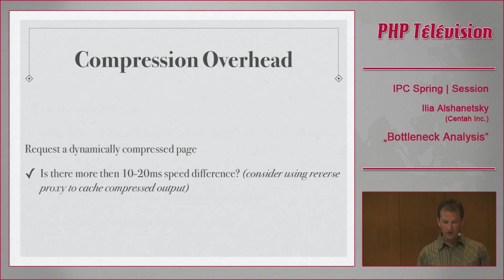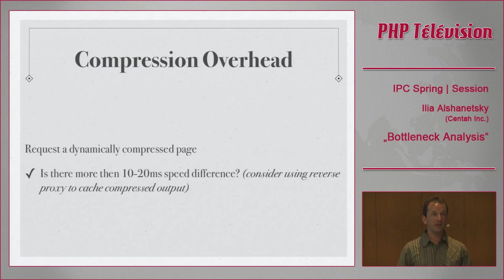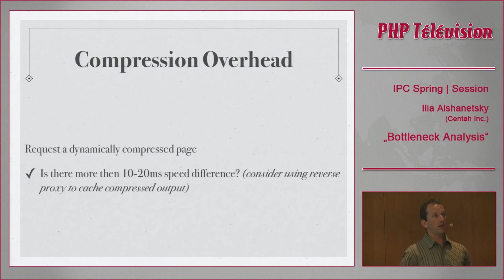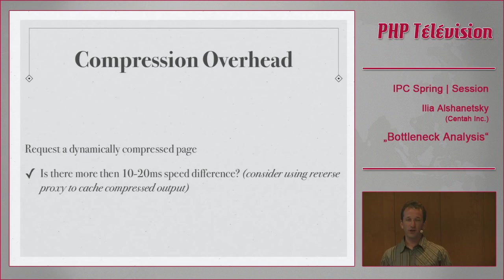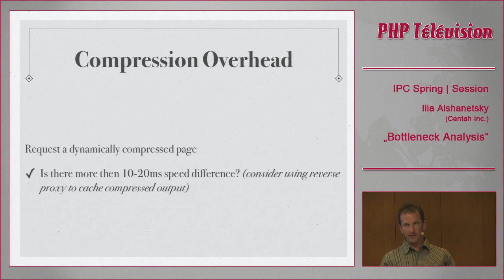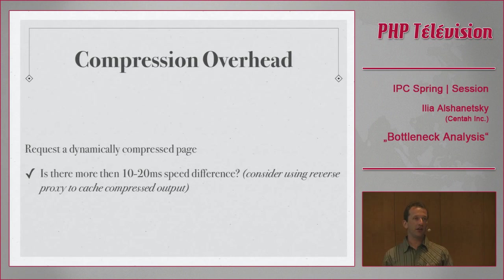Compression overhead should not be a problem in most cases — it shouldn't add more than 10 to 20 milliseconds. If it does, check your compression level setting. In implementations like mod_gzip in Apache, levels run from 1 to 9. Level 9 maximum compression can take up to twice as long for virtually no difference in file size compared to level 1. Set compression level to 1 or 2 at maximum — the extra processing for more elaborate compression really doesn't make much difference.